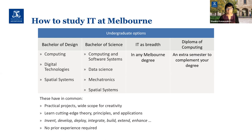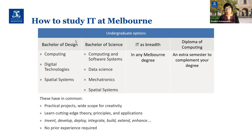However, it's not limited to that — there are different ways you can study IT, maybe not as deep as those two majors. In the Bachelor of Science there's a Data Science major, mechatronics, and spatial systems. In the Bachelor of Design, the Computing degree is more technical, Digital Technologies is more focused on human interaction, and Spatial is more focused on location-based data. As you go down the list, the amount of computing gets lesser.